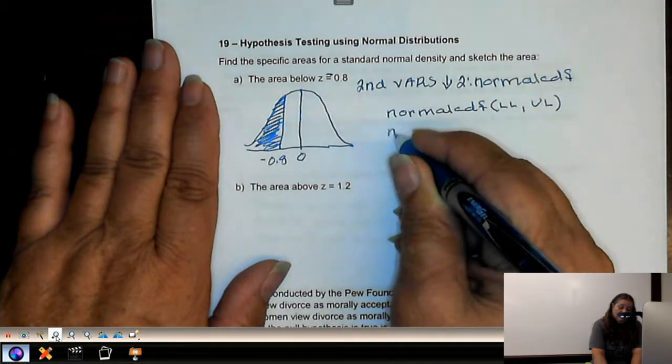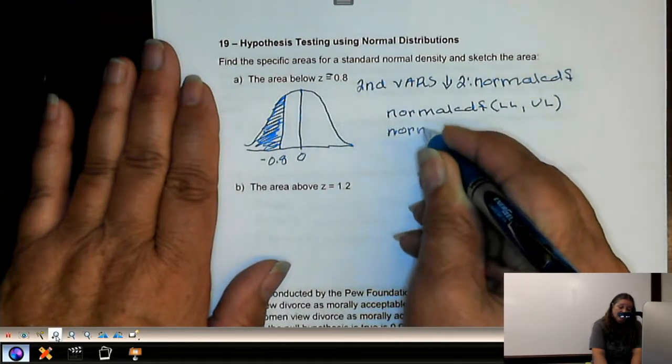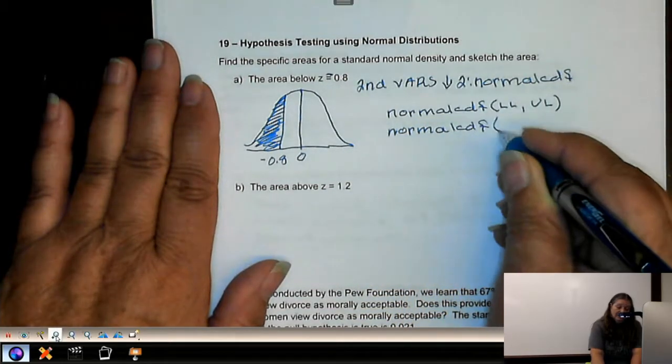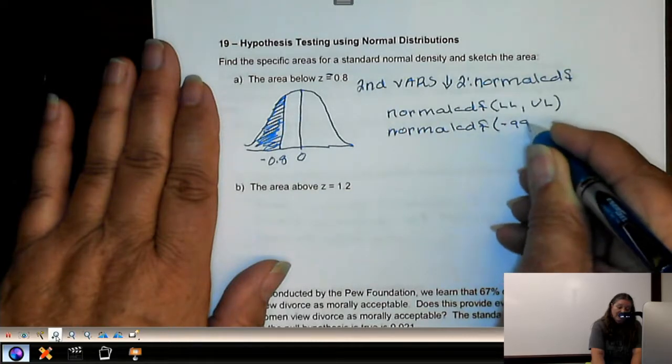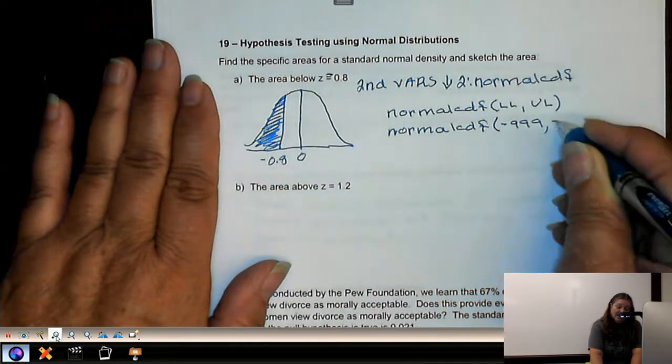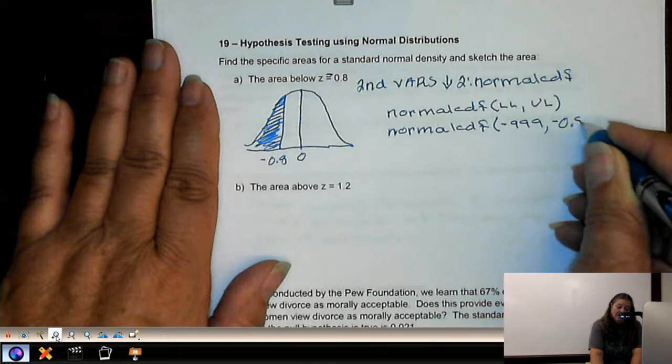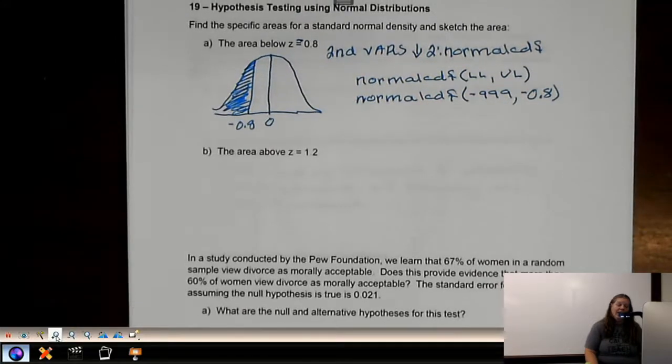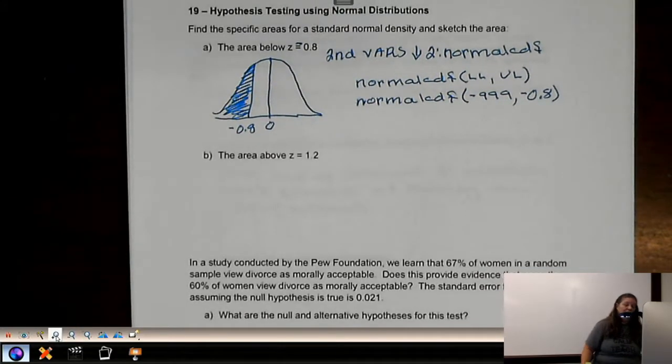Well, in this case, we really don't have a lower limit. It's a strictly less than. So then we're going to put negative 999 as our lower limit. Our upper limit is negative 0.8. Now, we might also ask you for a mean and a standard deviation, and if it does, your mean is 0, your standard deviation is 1.